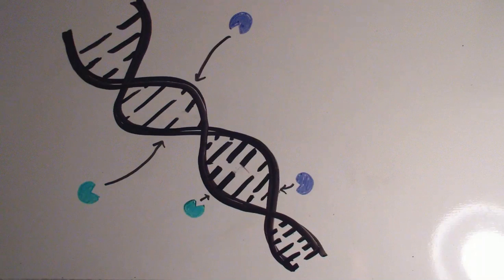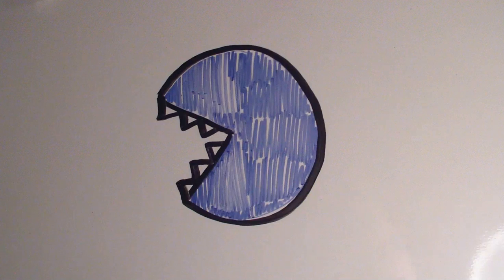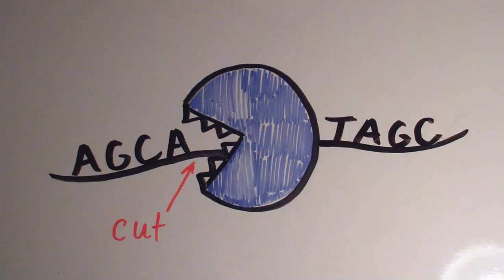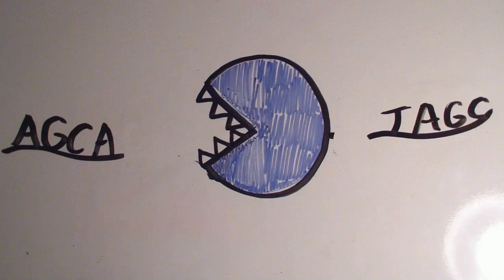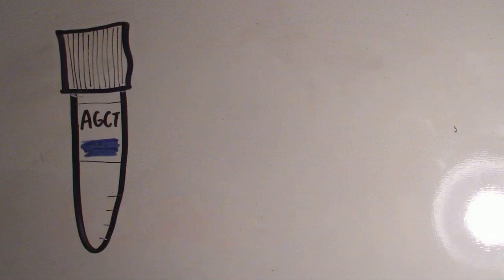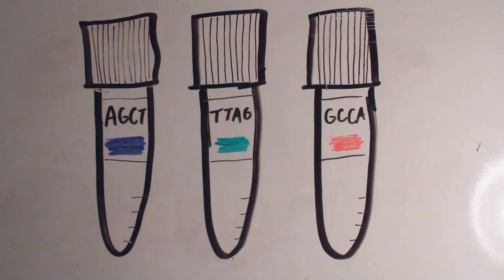Restriction enzymes, which are also called restriction endonucleases, have their own specific cutting sites within the nucleotide sequence, which ensures that all DNA molecules in a mix will most likely have been cut at the exact same location throughout. This method is extremely powerful because numerous commercially available restriction enzymes have been synthesized, thus allowing researchers to cut at extremely specific places.